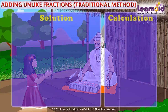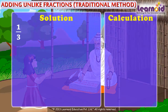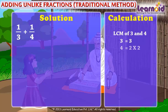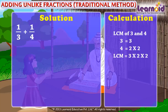We have to add 1 by 3 and 1 by 4. For this, we have to make both fractions into like fractions. First, take the LCM of 3 and 4. LCM is equal to 3 into 2 into 2, which is equal to 12.